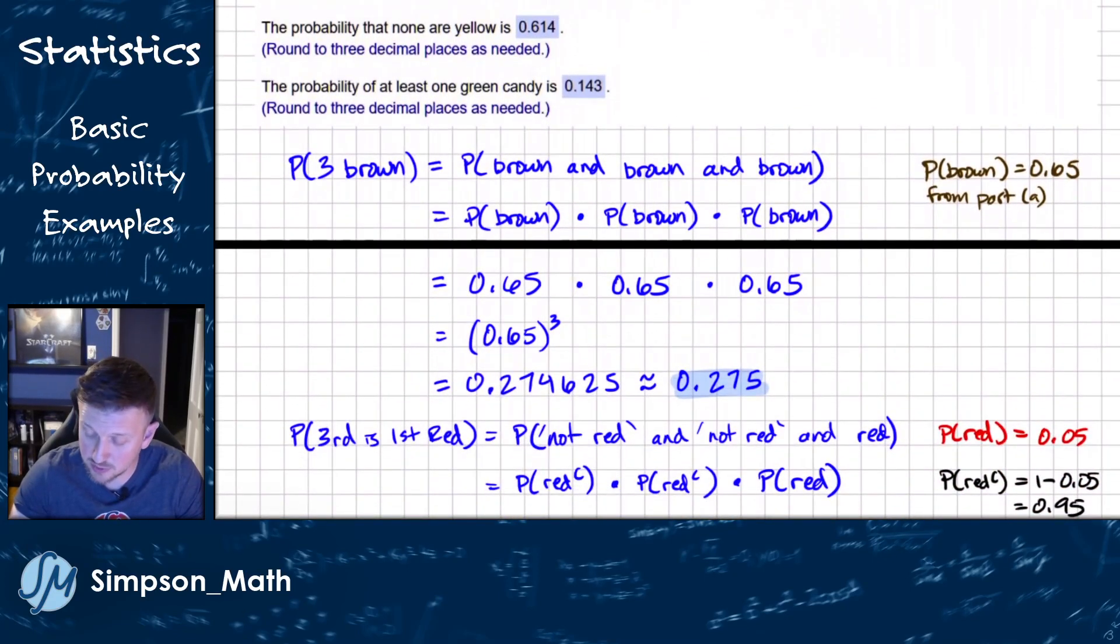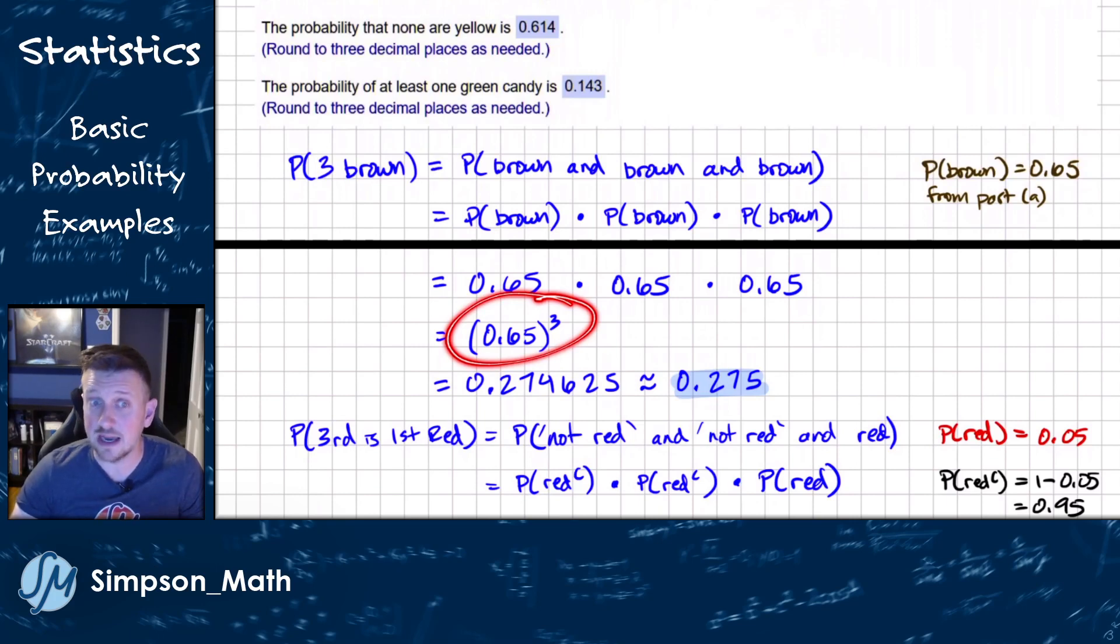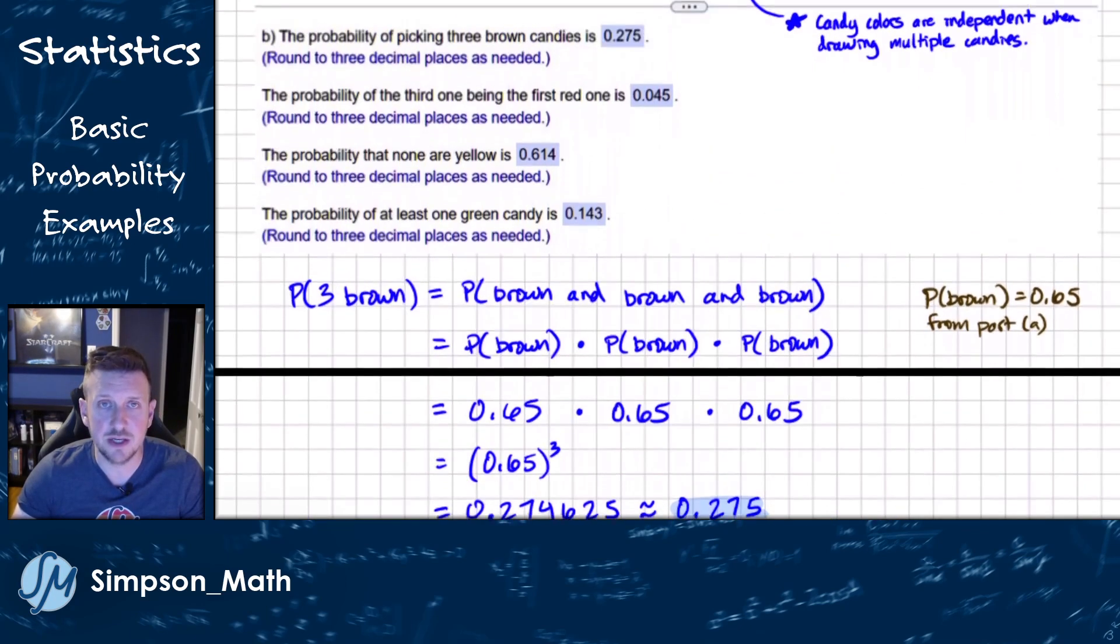We're told from our previous part, we saw that brown was 0.65. So it's going to be probability brown times probability brown times probability brown. Well, probability brown is 0.65. So we could re-express that as just saying 0.65 cubed. You don't have to do that. You could type 0.65 in three times, but mathematicians are efficient, lazy, but accurate creatures. So I'd rather just type in 0.65 cubed. It's faster. And when we do round to three decimal places, we get 0.275.